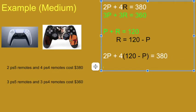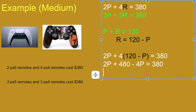And from there, it's pure algebra, which you should be good with by now. So, 2P plus, distribute this, 480 minus 4P equals 380. Combine my like terms. 2 minus 4 is negative 2.